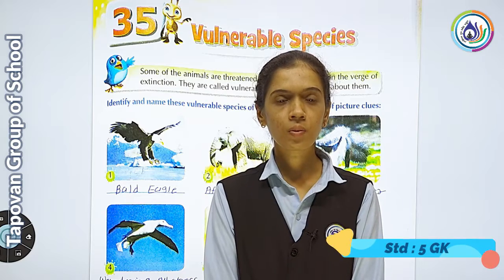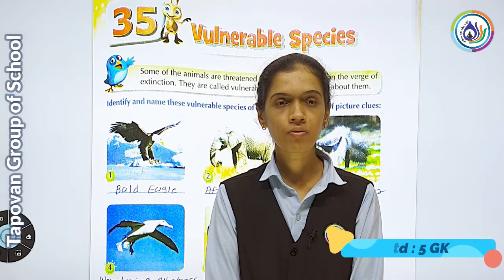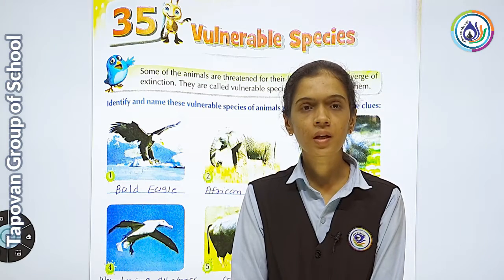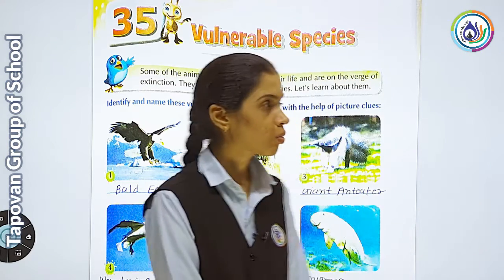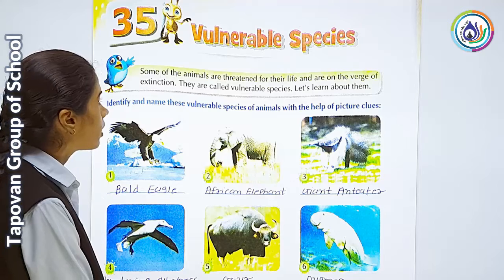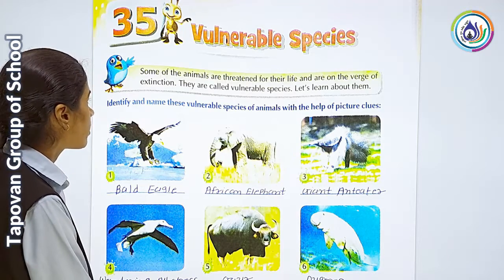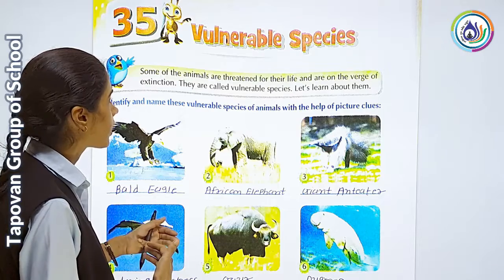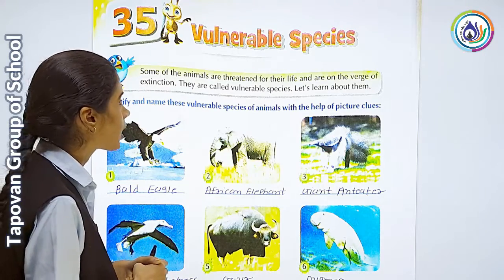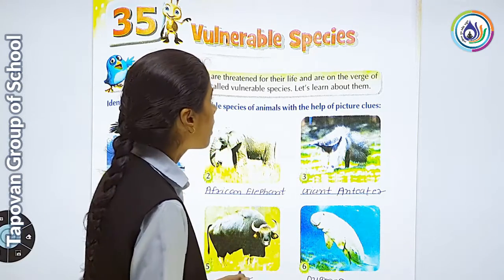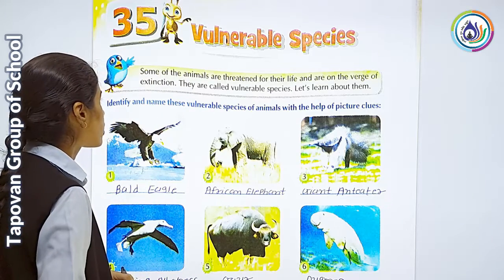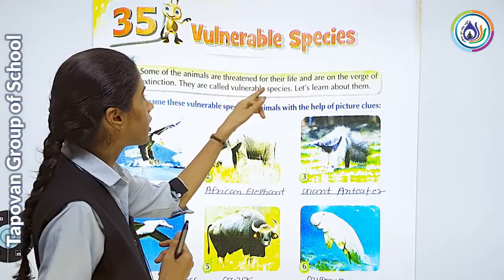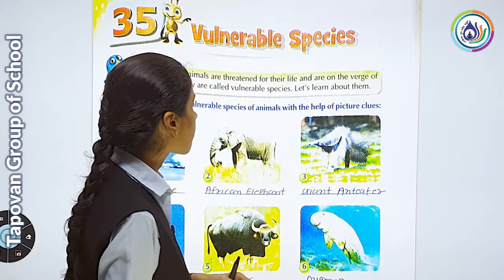Hello students, welcome to Tapaman Group Up School. Standard 5, subject GK. Today we will look at Chapter 35: Vulnerable Species. Some of the animals are threatened for their life — they are on the verge of extinction. They are called vulnerable species. Let us learn about them.